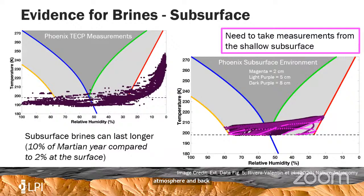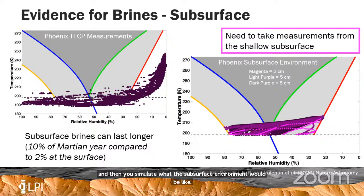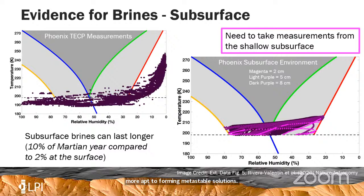In order to do the direct measurements to identify local formation, if you take the direct data from the Phoenix lander and put it on the phase diagram, we would expect surface liquid questions to occur because there are points within the liquid zone. But if you use that as a boundary condition and then simulate what the subsurface environment would be like, we can see that the subsurface environment is actually more apt to forming metastable solutions — going from maybe 2% of the year having a liquid on the surface to up to 10% of the Martian year in the subsurface.